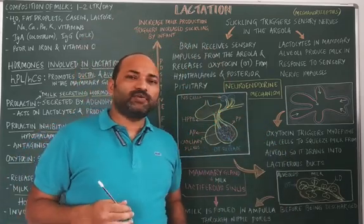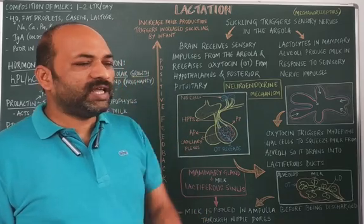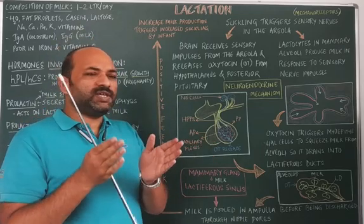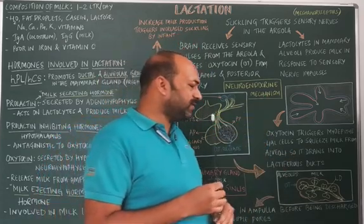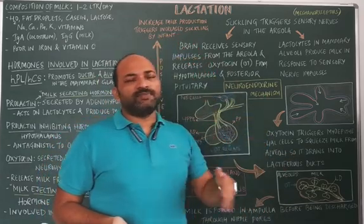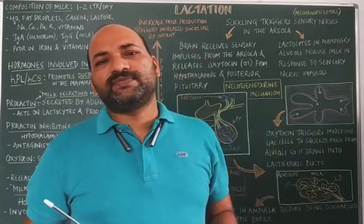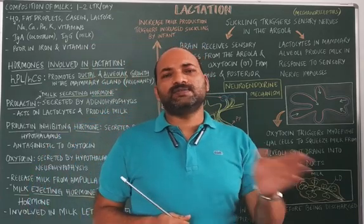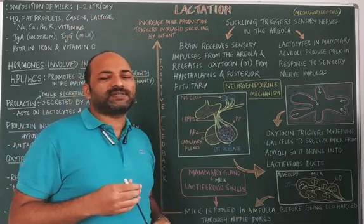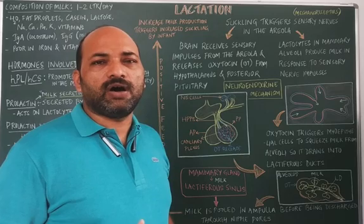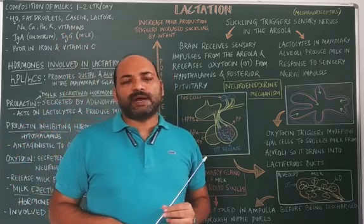The milk secreted in the mammary alveoli enters into the mammary tubules, from there into the mammary duct, and is temporarily stored in the lactiferous sinuses or ampulla. This milk is released out through the nipple via openings called nipple pores. This is the structure of the mammary gland in brief.